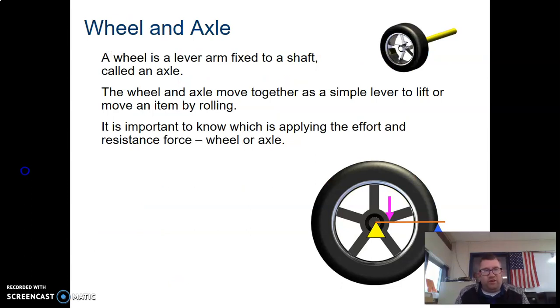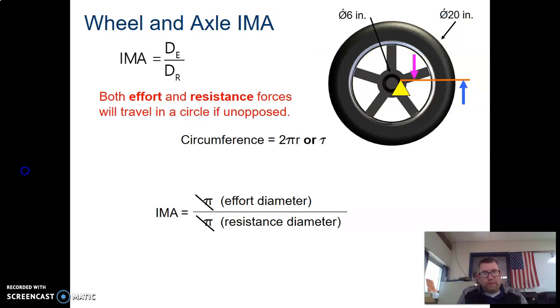Wheel and axle, lever arm fixed to a shaft called an axle. What the wheel is and what the axle is is depending on where the force is being applied. For example, on a steering wheel, the wheel is the larger circumference because you are applying the effort to the wheel. In the example of your drive shaft or turning the car's tires down by the road, the effort is being applied to the axle. Circumference is what we need to take into account or diameter, better, what we need to take into account when we think about wheel and axle.